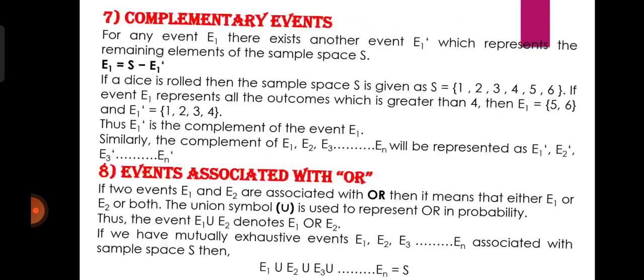Complementary events: अगर कोई event E है, और एक दूसरी event E' है जो E के remaining elements को define कर रही है sample space में, तो हम इसको complementary event कहेंगे। E' का formula होगा S minus E। मालेंगे S = {1,2,3,4,5,6} और event E represents all outcomes greater than 4 = {5,6}। तो E' = {1,2,3,4}। तो E' event E की complement हो गई। E1 का E1', E2 का E2', En का En' — ये सभी complementary events कहलाएंगी।